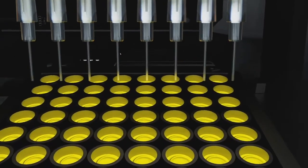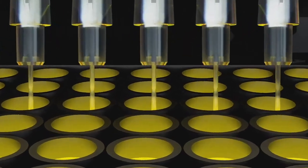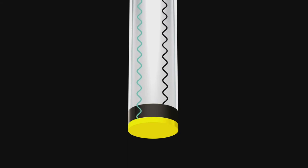BLI is an optical technique that analyzes the interference pattern of white light reflected from two surfaces: a layer of immobilized protein on a biosensor tip and an internal reference layer.